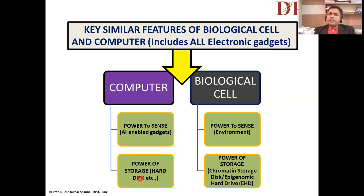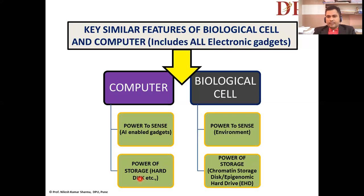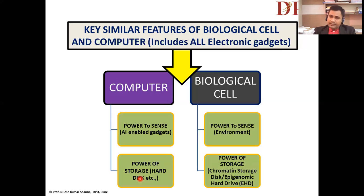Another interesting point: all AI-enabled gadgets nowadays are enabled to sense emotional or mechanical stimuli. Very recently there is a discovery of a skin-like material that can feel and have the same sensing mechanism as normal skin — meaning computer and AI-enabled technology are gaining the power of sensing. Similarly, biological cells have their own power to sense their environment and surroundings.